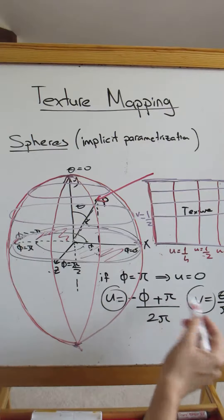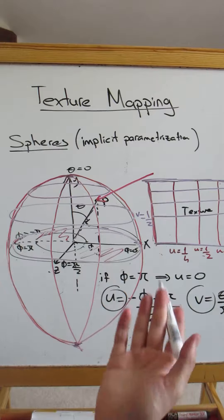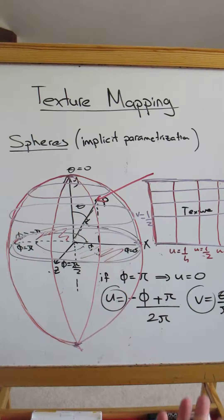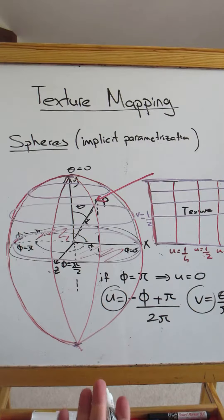from theta and phi, then we can apply nearest neighbor interpolation or bilinear interpolation in the same way as we have done for triangles.